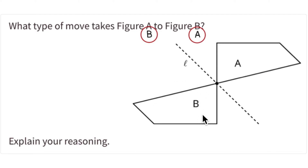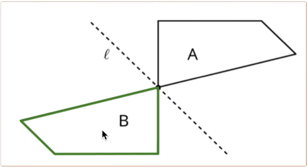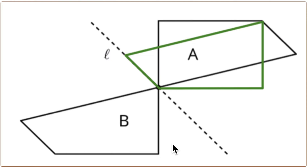Let's test that first. I'm going to take image B and slide it towards image A. Each of these arrows are parallel, so every point is moving in the same direction, and every point is moving the same distance — each arrow is the same length.